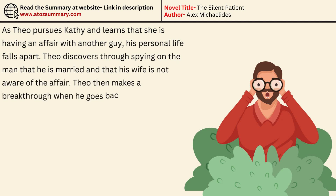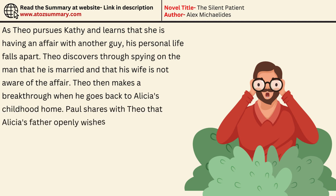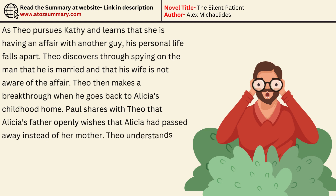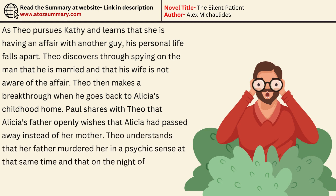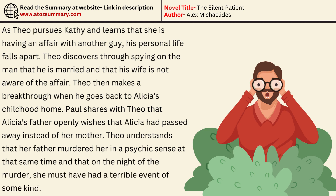Theo then makes a breakthrough when he goes back to Alicia's childhood home. Paul shares with Theo that Alicia's father openly wished that Alicia had passed away instead of her mother. Theo understands that her father had murdered her in a psychic sense, and that on the night of the murder, she must have experienced a terrible event of some kind.